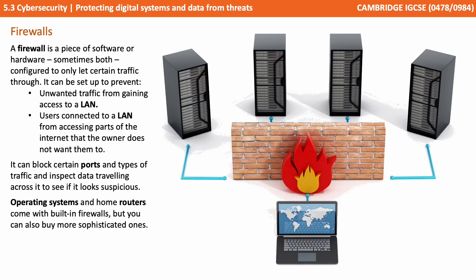Next we look at firewalls. A firewall is a piece of software or hardware — sometimes both — configured to only let certain traffic through it. It can be set up to prevent unwanted traffic from getting access to a LAN, and from users connected to a LAN from accessing parts of the internet that the owner doesn't want them to. It can block certain ports and types of traffic, and inspect data travelling across it to see if it looks suspicious. Operating systems and home routers come with built-in firewalls, but you can also buy more sophisticated ones from dedicated providers.